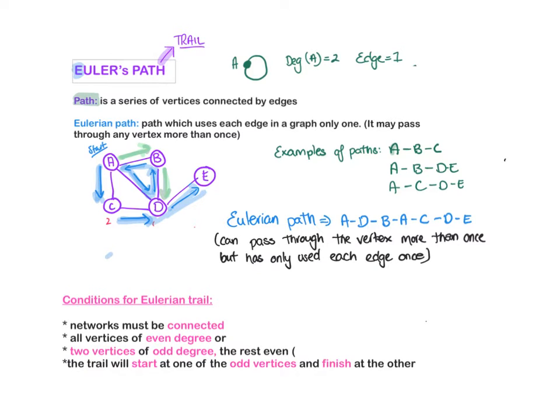Let's look at the degrees of our network. The degree of A is three, degree of B is two, degree of C is two, degree of D equals four, and the degree of E is equal to one. You can see we only have two odd degrees. So that's why a Eulerian trail will work.